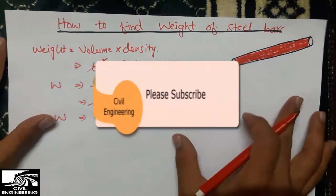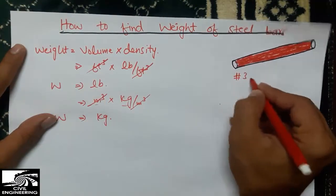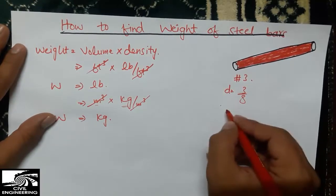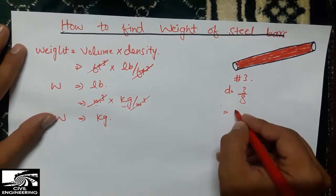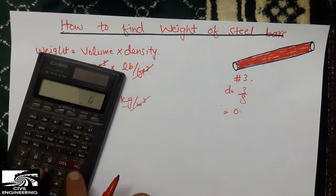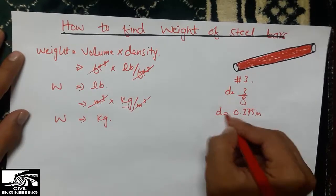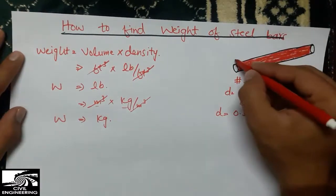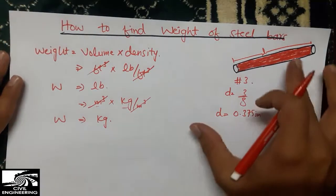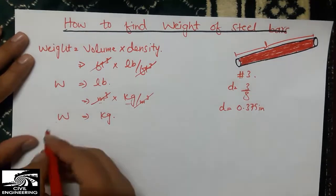Let's work through an example using a Number 3 bar. Its diameter is 3/8 inch, which equals 0.375 inches. We'll call the length of this bar L, and we want to find the weight of this steel bar.